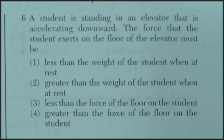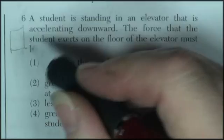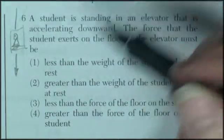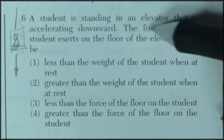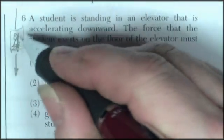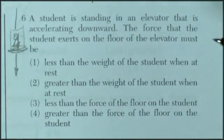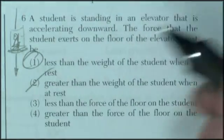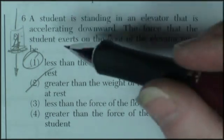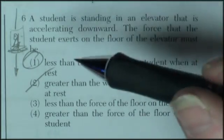Question six. A student is standing in an elevator that is accelerating downwards. Now here's the elevator. If they were staying stationary, it was just parked or traveling at a constant velocity, they'd be in there, but it's accelerating downwards, which means they're going to be kind of lighter. So the floor, the student exerts on the floor of the elevator must be. So basically they're asking about the pressure and it's going to be less than the weight of the student. It's accelerating downwards. If it was accelerating upwards, it would be greater. The force that the student exerts on the floor must be less than the weight.